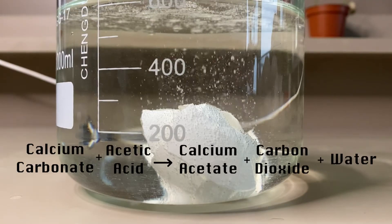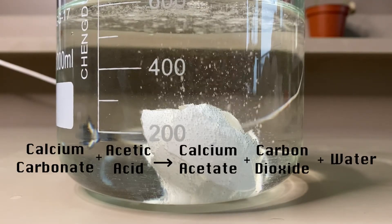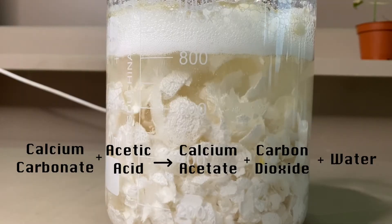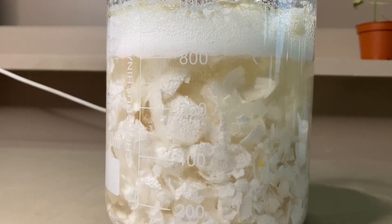Calcium carbonate in eggshells reacts with acetic acid to form calcium acetate. Carbon dioxide gas is liberated during the reaction and causes the foaming.